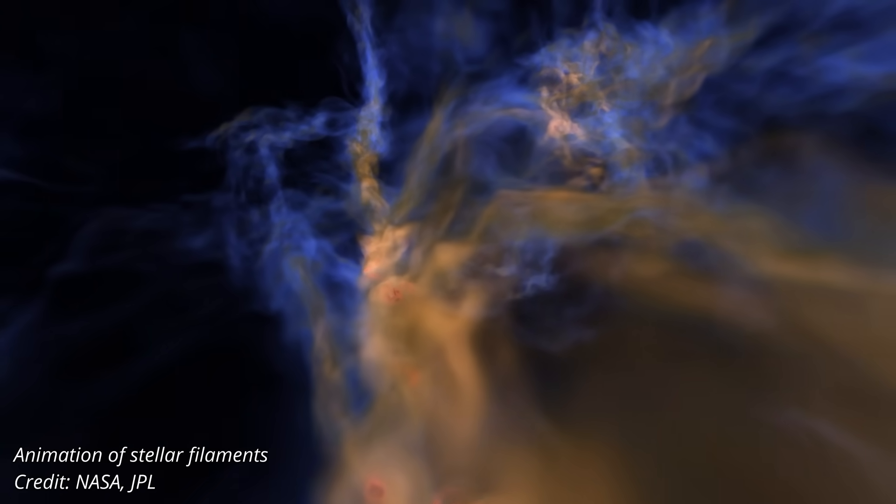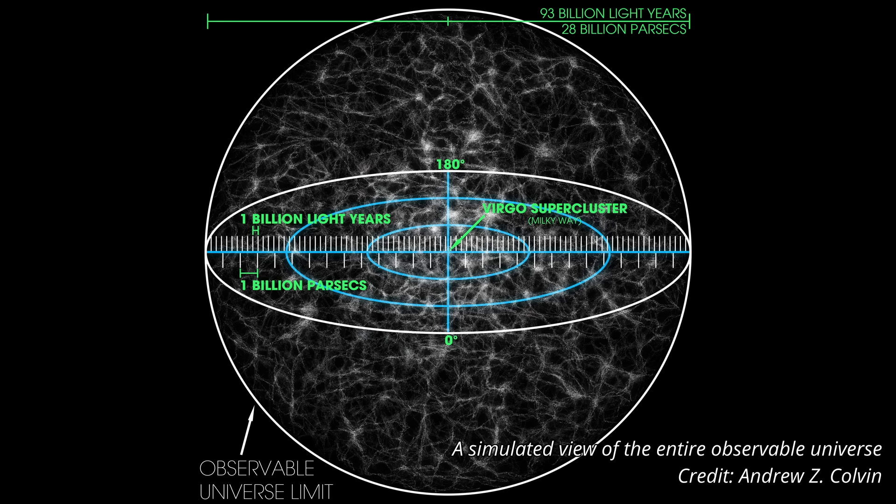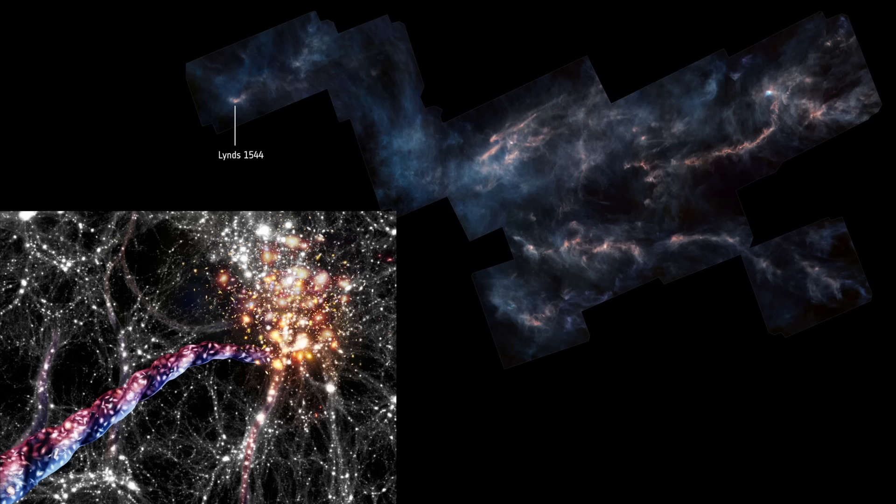At one scale, we're told turbulence and gravity are enough. At another, we're told only dark matter can do it. But in both cases, the explanation falls short. The truth is, the universe probably doesn't use two entirely different mechanisms to create the same kind of structure. The filaments we see at every scale are almost certainly manifestations of the same underlying process.